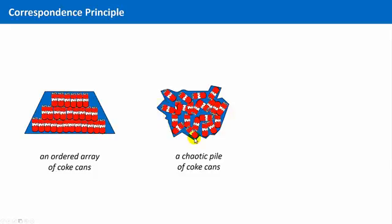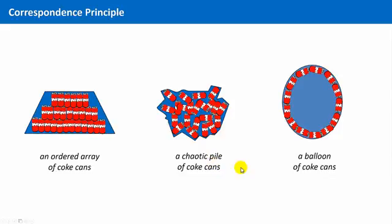And to show you another example, a crystal also cannot have a globular, or spherical, or balloon-like shape. This is not possible because there is no regular array, no 3D periodic arrangement of cans which could lead to a balloon-like shape.